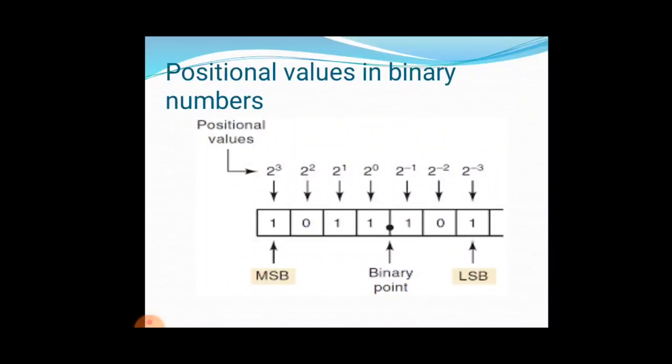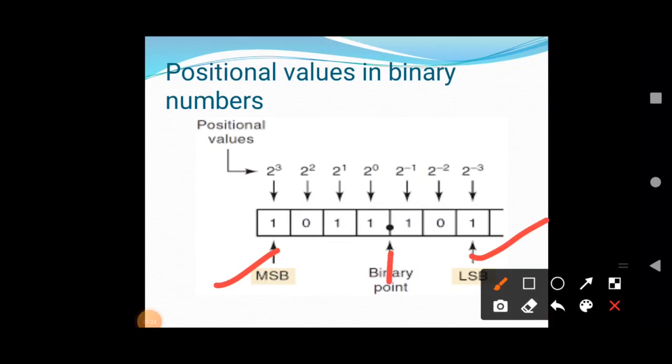Look at this in the figure. The positional value is given. This is MSB, LSB and now binary point. This is your level. Because it is 2 to the power of 3, 2, 1, 0, and so on.